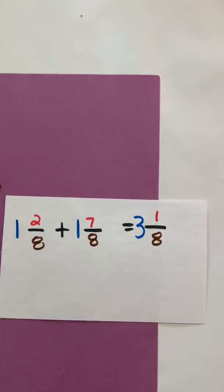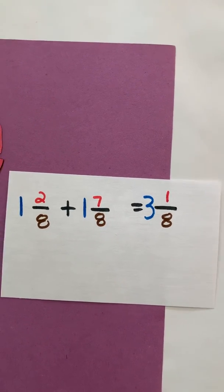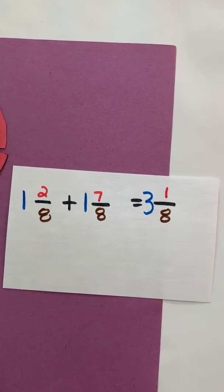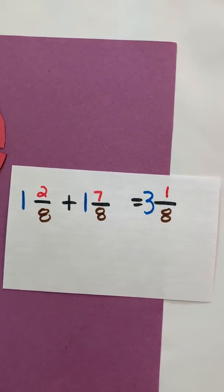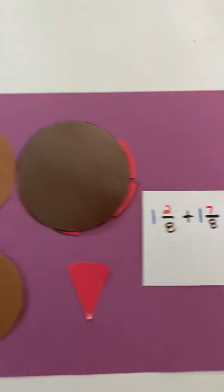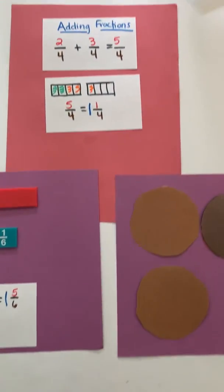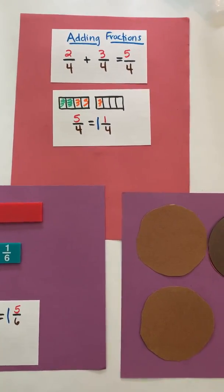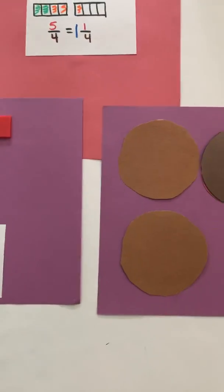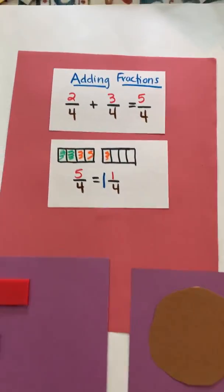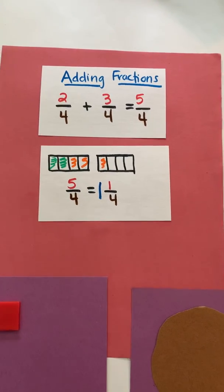All right, and three and one-eighths cannot be simplified either. The only factor of one is one, and if I divide one-eighth by one, I will get one-eighth again, so three and one-eighths. So you can see how we have used models to add fractions greater than one with mixed numbers. You can use rectangles, you can use circles, you can go online and find some math manipulatives. So now we're going to let you try some on your own.